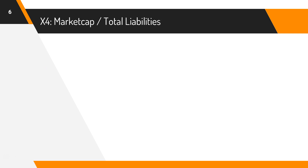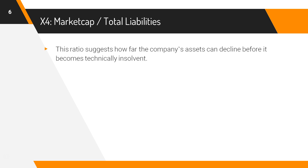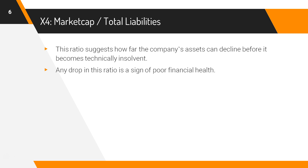X4 is market cap divided by total liabilities. This ratio suggests how far the company's assets can decline before it becomes technically insolvent. Any drop in this ratio is a sign of poor financial health.